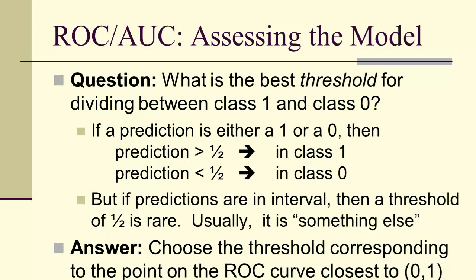And the something else we'll get from the receiver operating characteristic, in particular choosing the point that's closest to the ideal, 0, 1.